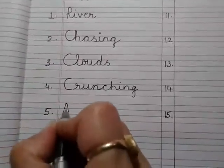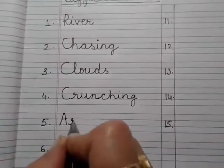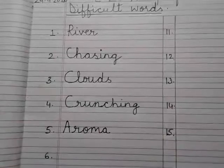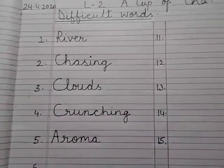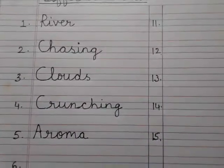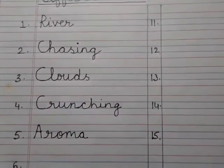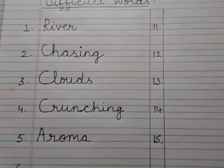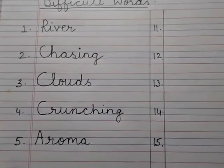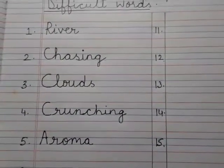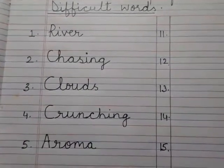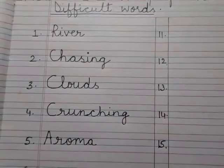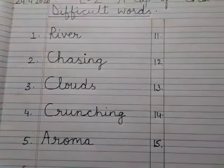Aroma means khushbu — especially khaane ki cheezein ki khushbu. Jab mummy Maggi banaati hai toh khushbu aati hai. Maggi toh junk food hai, lekin hai na. Jab mummy khaana banaati hai, accha accha toh khushbu aati hai — use kehte hain aroma. Jab mummy halwa banaati hai toh khushbu aati hai na. Aroma.